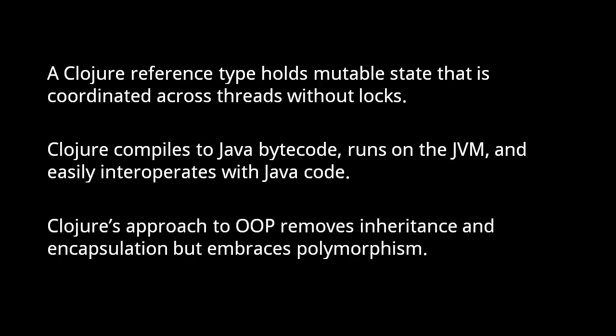Clojure's creator, Rich Hickey, views traditional object-oriented programming with skepticism, and so despite Clojure's close connection to Java, the data types we create in Clojure have no notion of inheritance or encapsulation. The one part of object-oriented programming which Rich Hickey does like is polymorphism. So Clojure does include mechanisms for creating functions that vary their behavior based on the number and types of the arguments provided to a call.